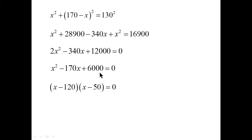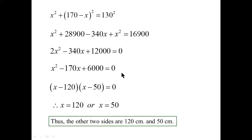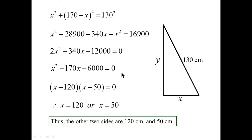Factoring: two numbers that multiply to 6,000 and add up to 170 are 120 and 50. So factoring and solving by factoring, x equals 120 or x equals 50. And so concluding: the other two sides must be 120 and 50. A reasonable question might be, well, which one is it?